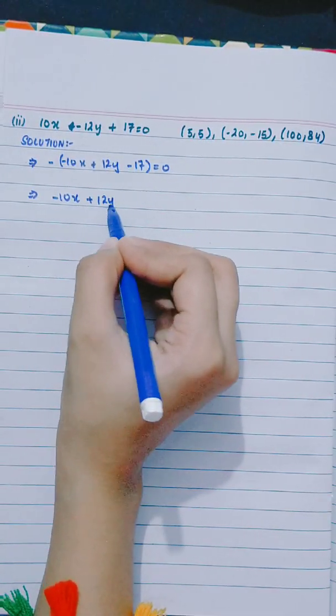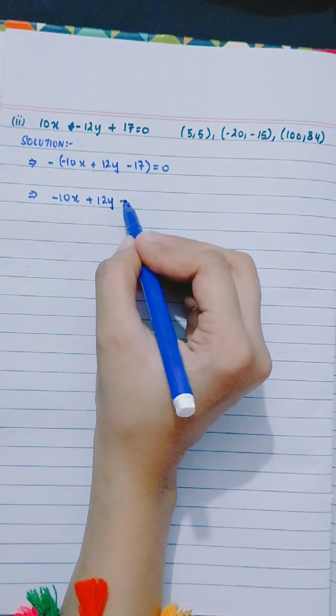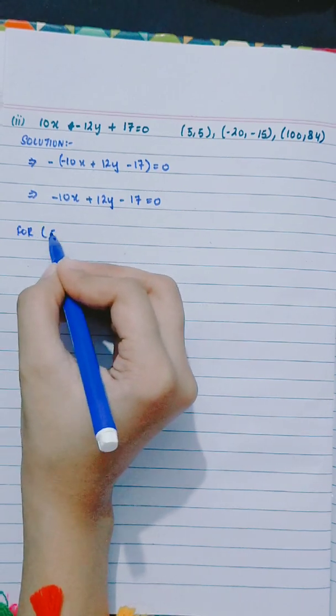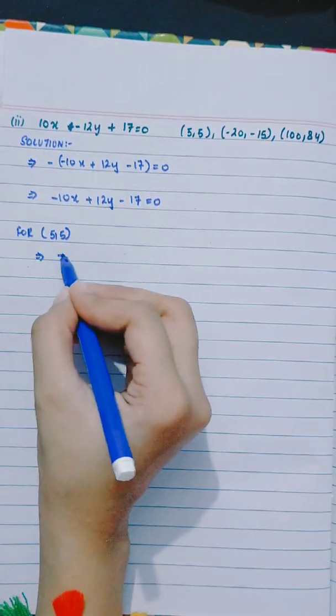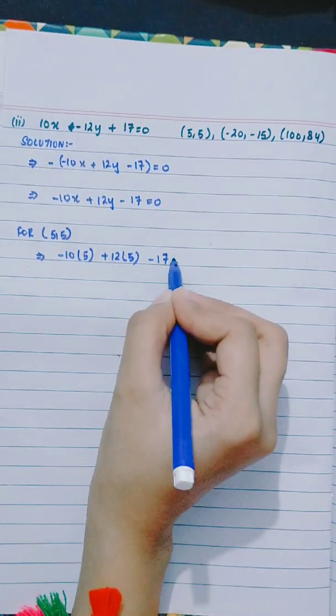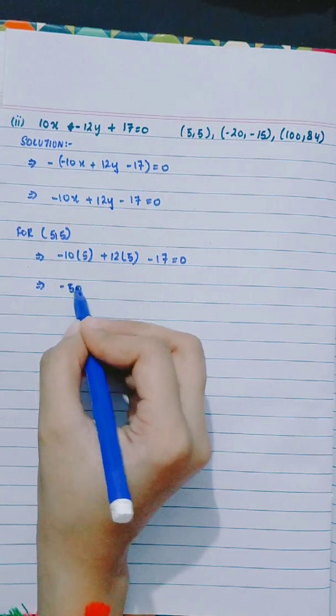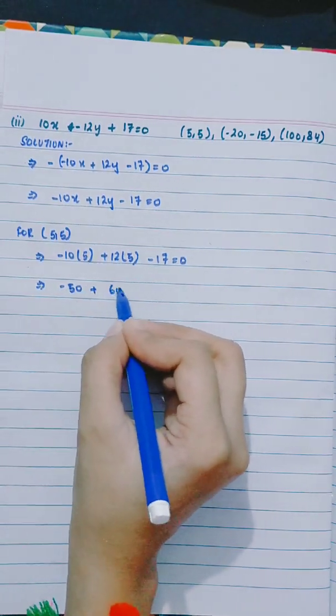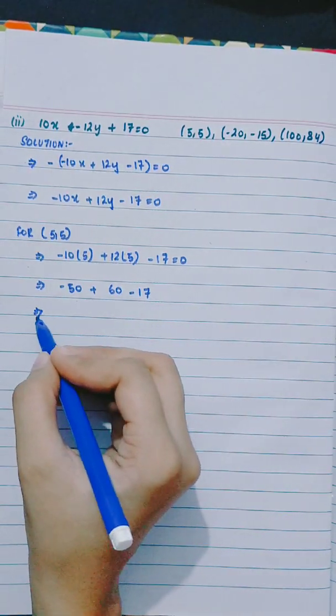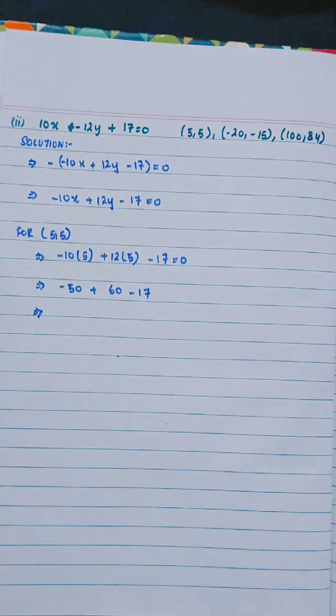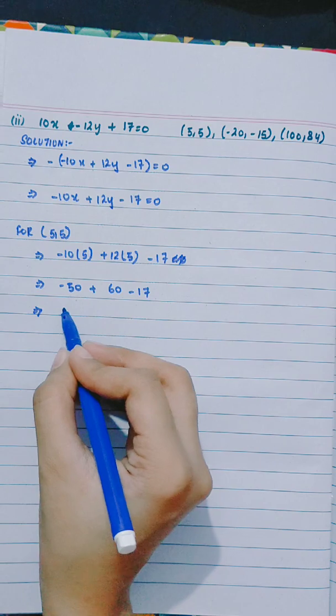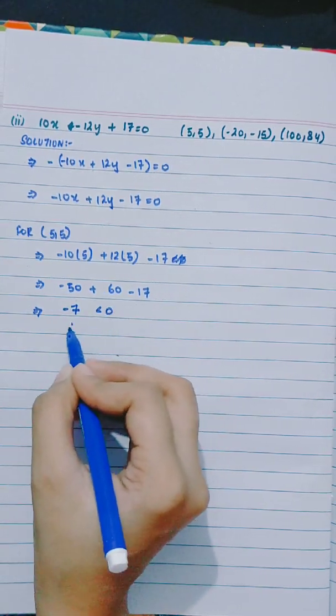For (5,5), -10 times 5 plus 12 times 5 minus 17. This gives minus 7, less than 0, therefore below the line.